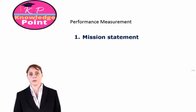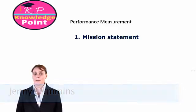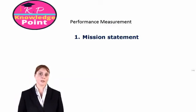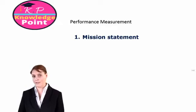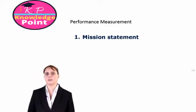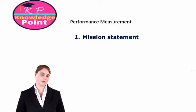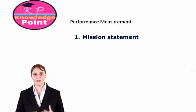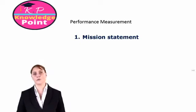We've mentioned performance measurement already in the F2 syllabus. When we looked at the variances chapter in particular, we said that a manager's performance could be measured against the extent to which they had achieved the standard or target costs and revenues set during the budgeting process. In this section, we're going to take a closer look at the things which need to be considered in relation to performance measurement, and we are going to see a number of different tools or techniques which can be used within an organization to ensure the performance measurement system is robust.